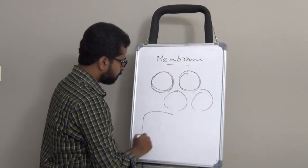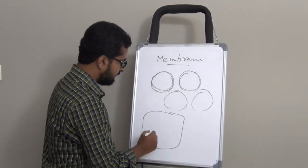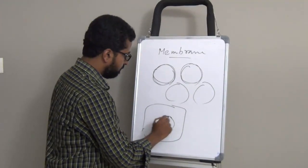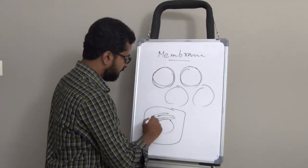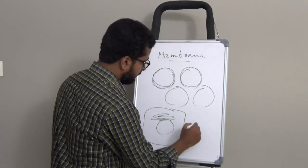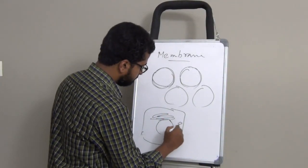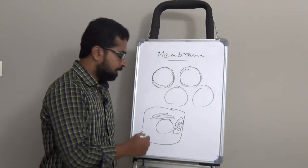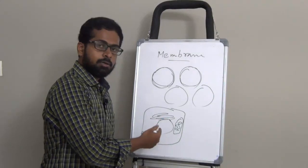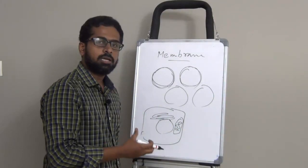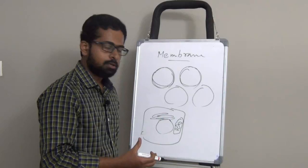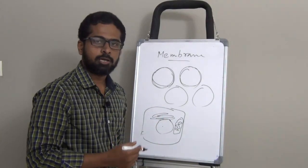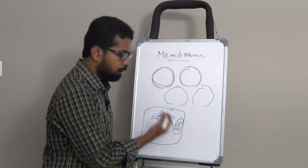Membranes also form closed compartments within the cell, just like nuclear membrane or membrane of an endoplasmic reticulum or a mitochondrial membrane. This is the cell membrane, inner mitochondrial membrane, outer mitochondrial membrane. Membranes form closed compartments within the cell forming intracellular structures or subcellular organelles like nucleus, mitochondria, endoplasmic reticulum and other such subcellular organelles.